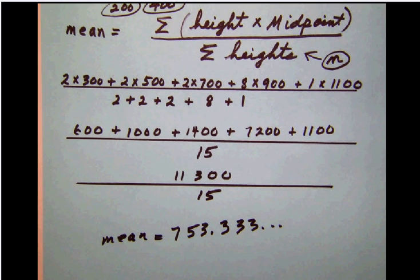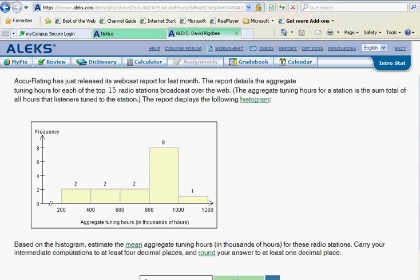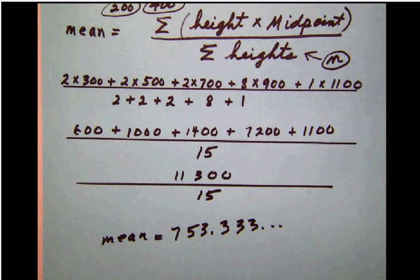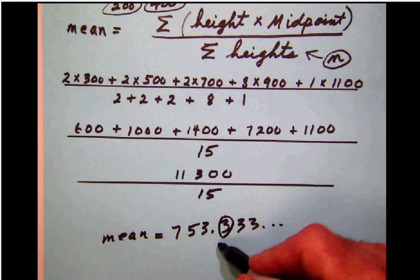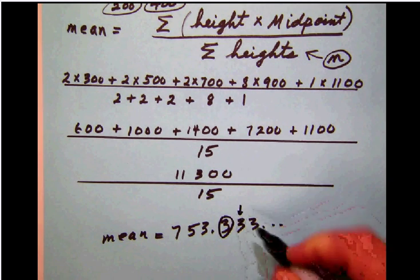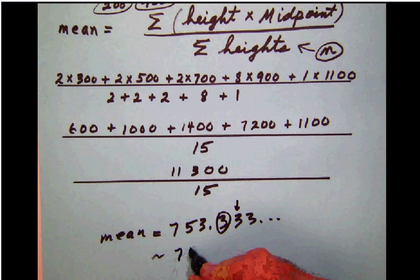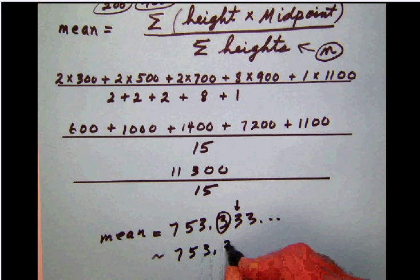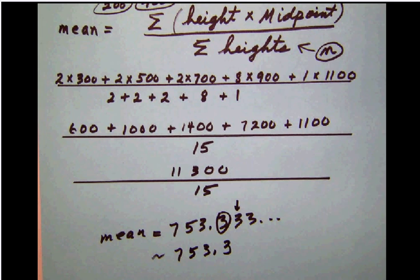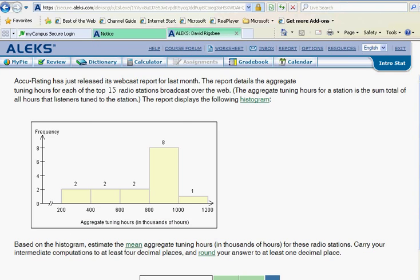Let's take a look here and see what ALEKS wants. They say round your answer to at least one decimal place. Okay, so what we need to do then is to round to one decimal place. Let's go back and notice here that one decimal place, the first decimal place is a 3, the next digit is a 3, so we will round 753.3, which we will report for our mean. Back in ALEKS, 753.3.